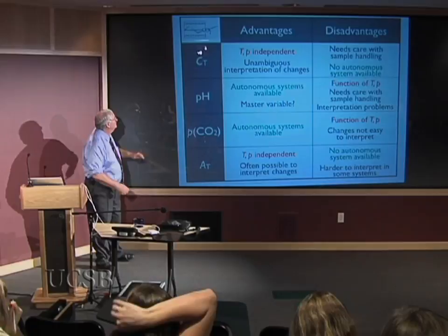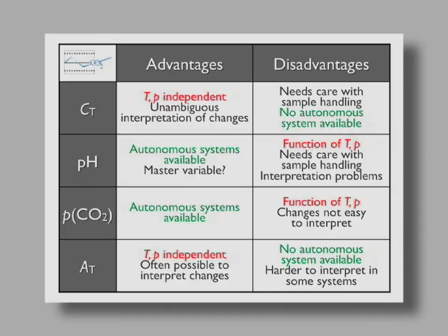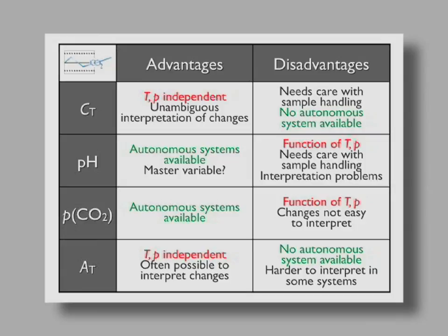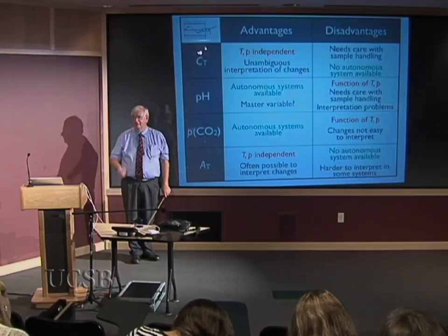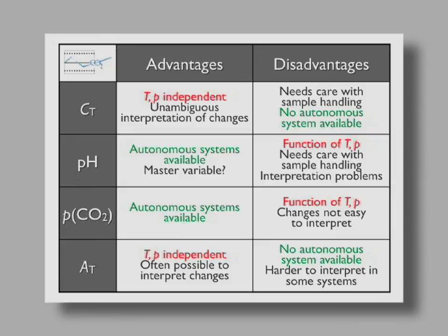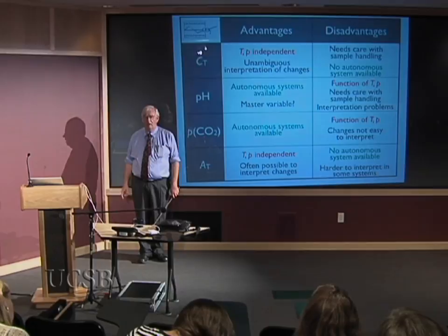Total carbon has real advantages: temperature and pressure independence. You can take a sample, send it to San Diego, and they make a measurement — it's still the total carbon in that seawater, provided it was stopped from changing by putting it in a closed bottle with mercuric chloride. Problems: you need care in sample handling, because pouring it from a height will cause you to lose CO2. There also aren't any systems that automatically measure this continuously.